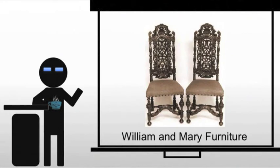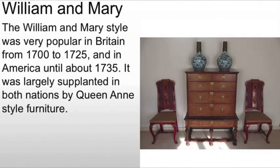Now let's talk about William and Mary furniture. The English Baroque style was named for the reign of William of Orange and Mary II. William was the Dutch husband of Mary II; they became co-rulers through what could be called a coup or civil war. They brought with them numerous Flemish and Dutch craftsmen and a predisposition for the designs of France and the Low Countries. The William and Mary style was popular from 1700 to 1725 in England and until about 1735 in the Americas, which tended to lag behind. It was largely supplanted by Queen Anne and then Chippendale.